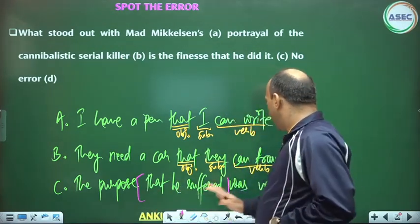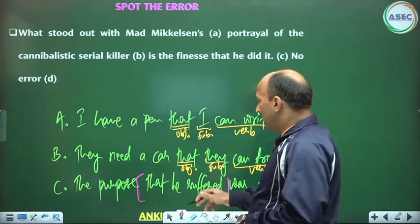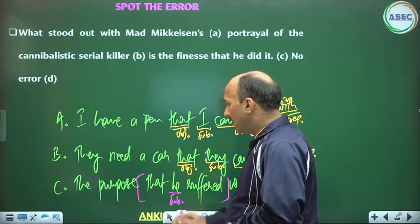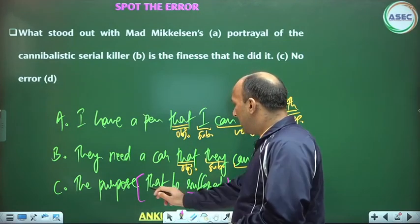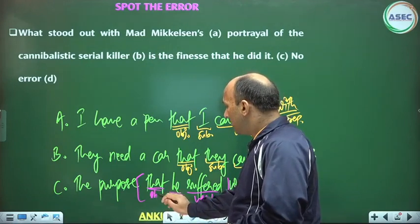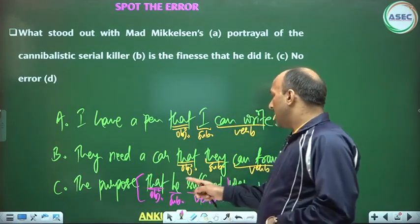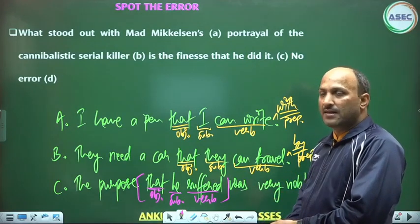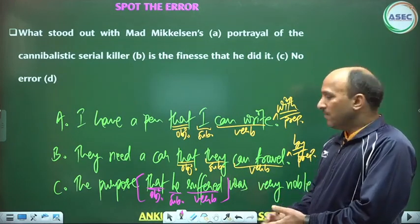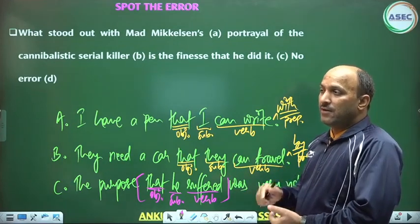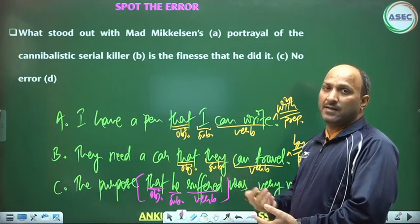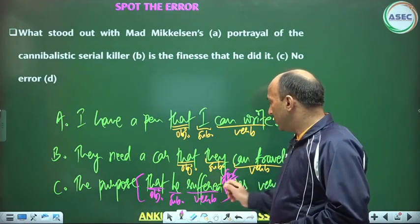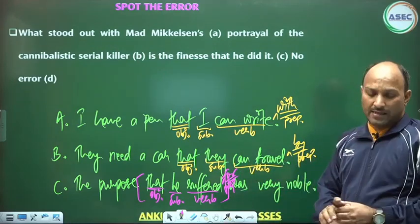The purpose was very noble — main clause. This verb subject is not the object. The purpose cannot be the thing suffered. We suffer humiliation, we suffer pain, but we don't suffer a purpose. The purpose is not what is suffered — the purpose is the reason why we suffer.